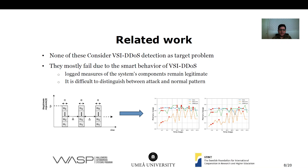It becomes difficult for traditional methods to distinguish between the attack and normal patterns. As you can see in the figures, the red points are where the attack happened and the rest are the normal situation, and there is no obvious difference between those data points.